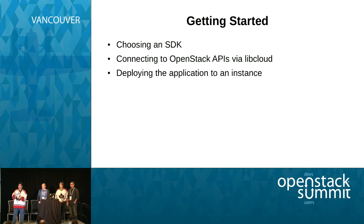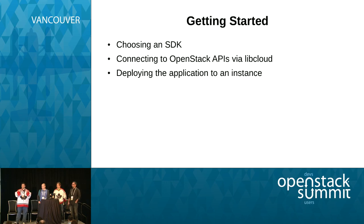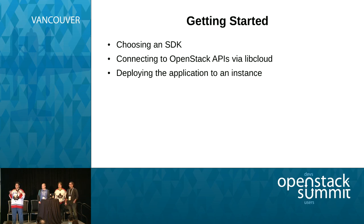We'll go through and choose an SDK. In this case, we're going to look at connecting to the APIs. Remember about OpenStack — everything is built as an API. That's the whole point of cloud. I don't have to go in there and modify the Nova database; I'll just call the API. We are talking about the general OpenStack API, not the individual project REST APIs. And then we're going to actually deploy the application to an instance that we create.